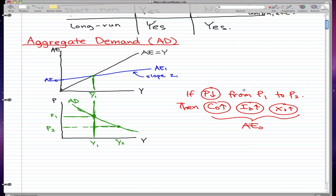If the price level falls from P1 to P2, then consumption, investment, and exports rise. But that is not all. Also, Z, our marginal propensity to spend, also increases.